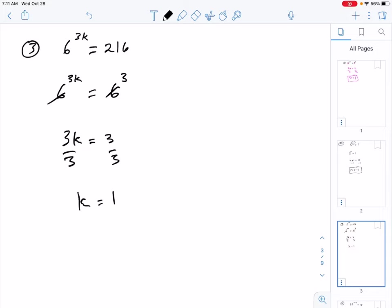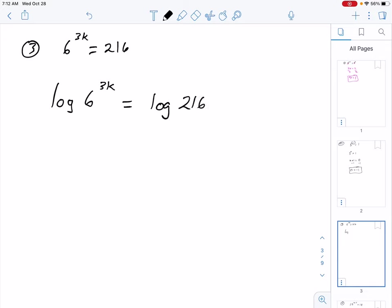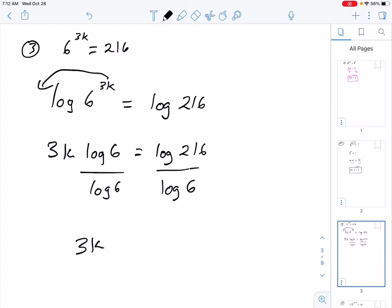That's one way to do it. Not everybody's going to know 216 is 6 to the power of 3. If you wanted to, you could also take the log of both sides. So the log of 6 to the 3k is equal to the log of 216. Remember exponents can go out front, so 3k times the log of 6 is equal to the log of 216.